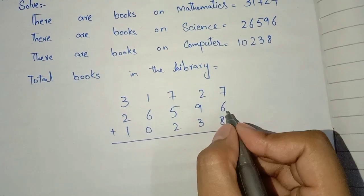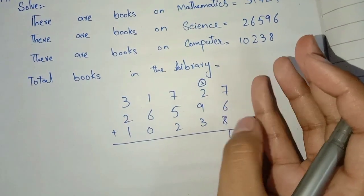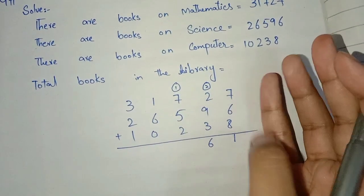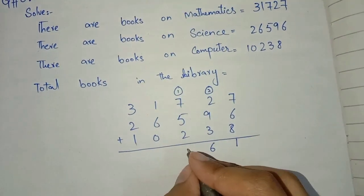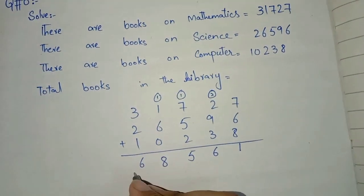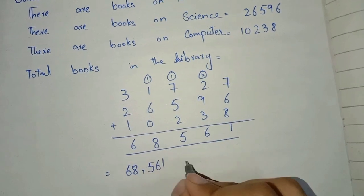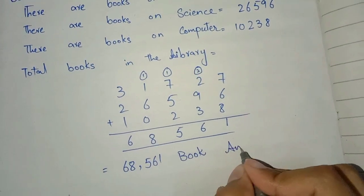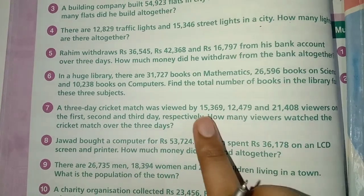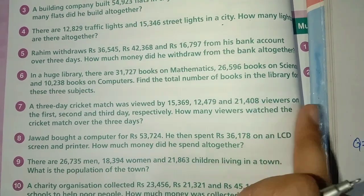Working through the addition step by step: adding the ones, tens, hundreds, thousands, and ten-thousands columns to get the total.